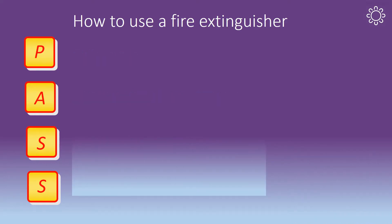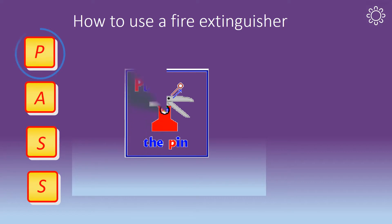Pull the pin. Hold the extinguisher upright and twist the pin to break the seal. Once this has been done, pull the pin to release the trigger. This will allow you to discharge the extinguisher.